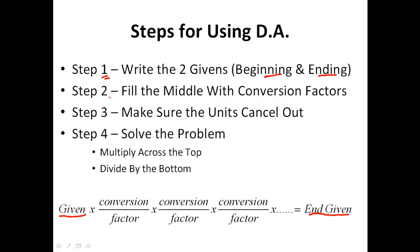Step number two is to fill the entire middle of the problem with conversion factors, such as one foot equals twelve inches, twelve inches per one foot. Step number three is to make sure units cancel out — whatever unit, say feet, is on top, I need to see feet down below and cancel them out. Step number four is to solve the problem: anything on top I multiply, and anything on the bottom I divide by.